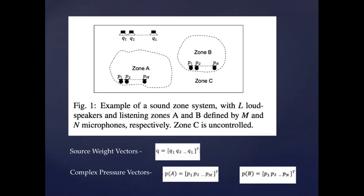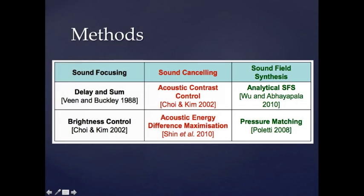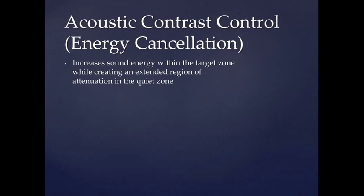There are three categories of methods: sound focusing, sound cancelling, and sound field synthesis. Energy cancellation techniques can be seen as an evolution of the beamforming approach. In addition to increasing sound energy within the target zone, an extended region of attenuation is created in the quiet zone.